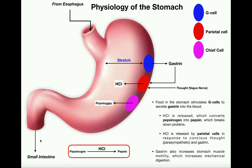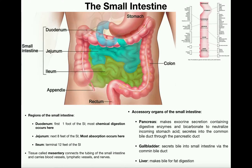When we look at the small intestine, its functions are a little bit different. Rather than chemical digestion and mechanical digestion as in the stomach, the small intestine's function is going to be chemical digestion and absorption. There's a little bit of absorption that occurs in the stomach, but really not a lot — the vast majority of absorption is going to be in the small intestine.